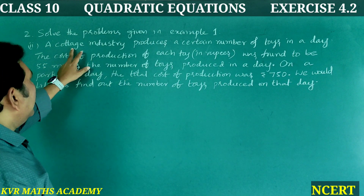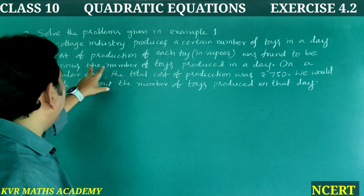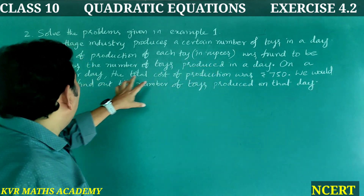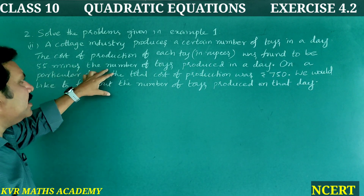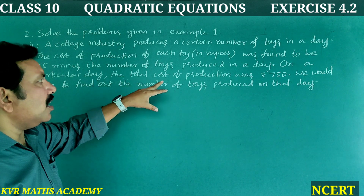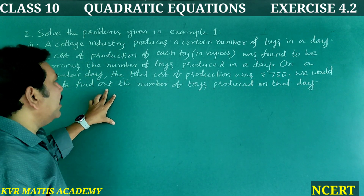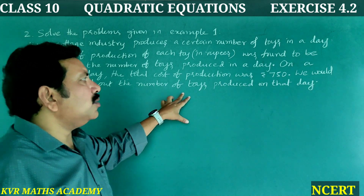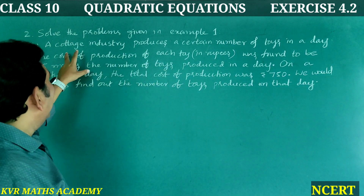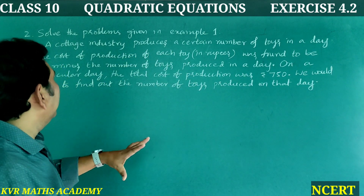Now the second question: A factory produces a certain number of toys in a day. The cost of production of each toy in rupees was found to be 55 minus the number of toys produced in a day. On a particular day, the total cost of production was rupees 750. We would like to find out the number of toys produced on that day.